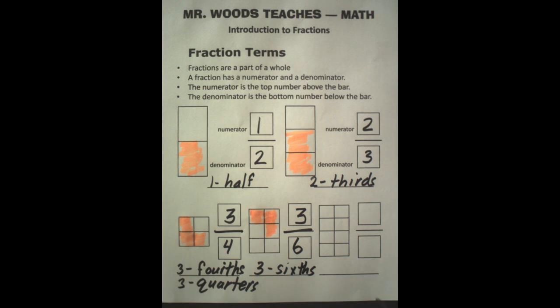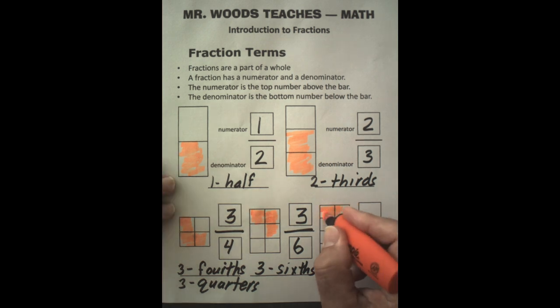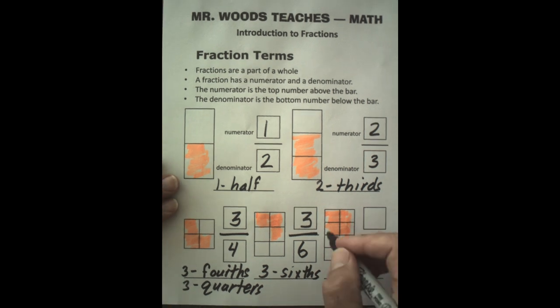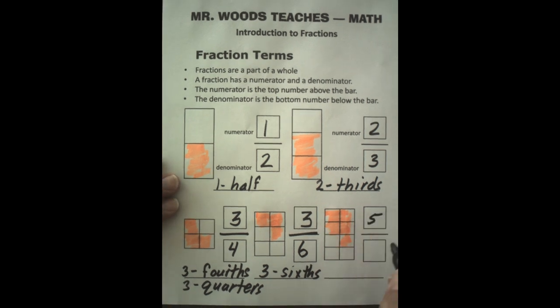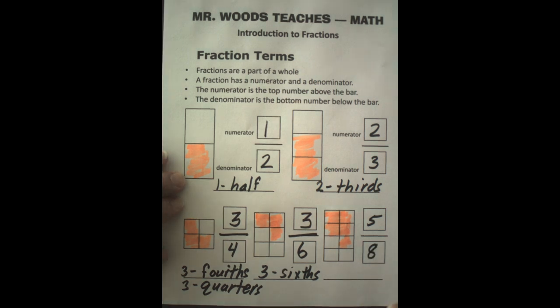We have how many pieces here? Two, four, six, eight. So it's eight. If I come over here, and I'm going to color in five of those, shading it. Colored pieces, five. Total, eight is the denominator. So I'm going to have five eighths.